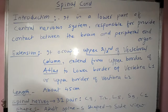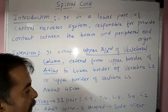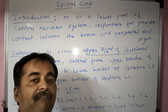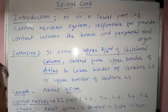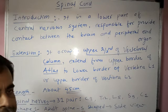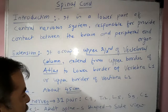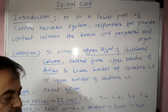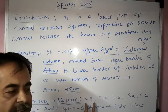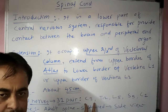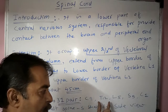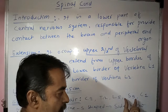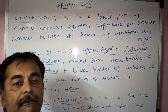The spinal cord has a length of about 45 cm. There are a total of 31 pairs of spinal nerves: cervical 8, thoracic 12, lumbar 5, sacral 5, and coccygeal 1.